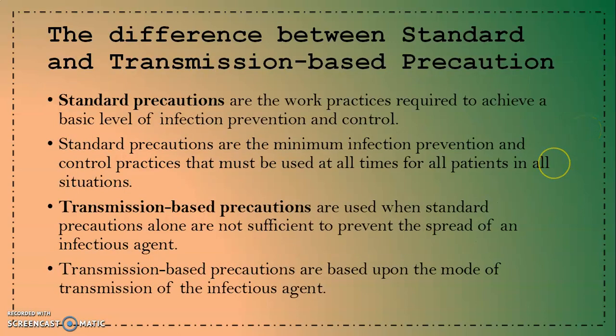The difference between standard precautions and transmission-based precautions is straightforward: standard precautions are the work practices required to achieve a basic level of infection prevention and control, while transmission-based precautions are used when standard precautions alone are not sufficient to prevent the spread of an infectious agent. Both precautions are important and share the same aim. Thank you for listening.